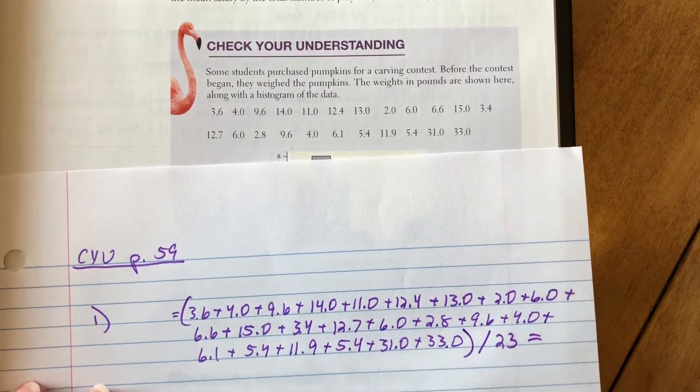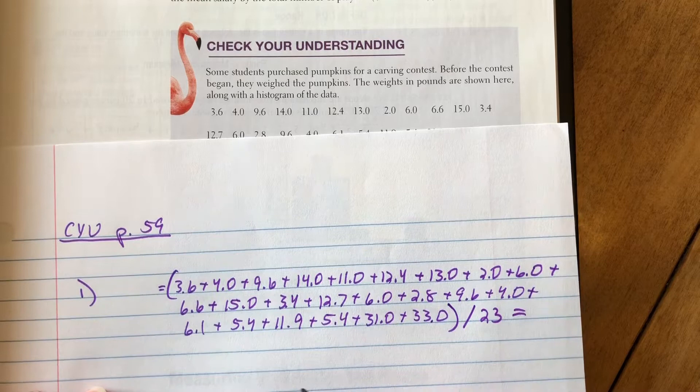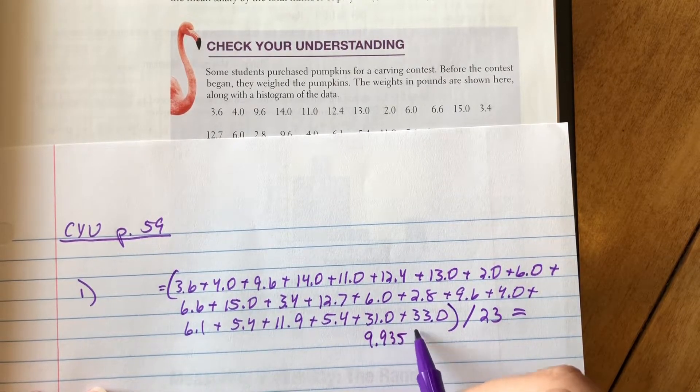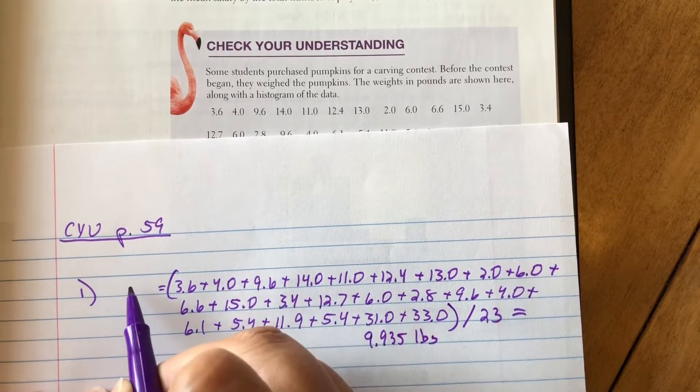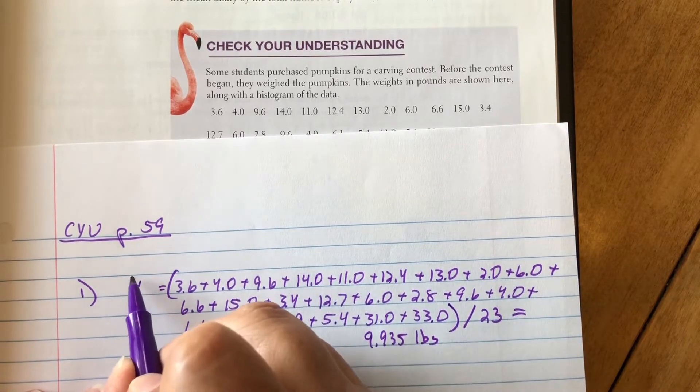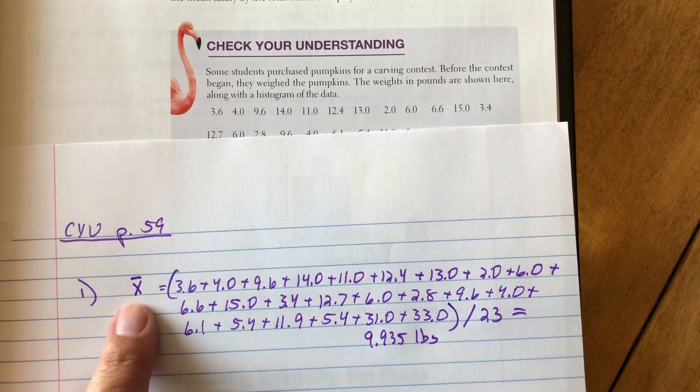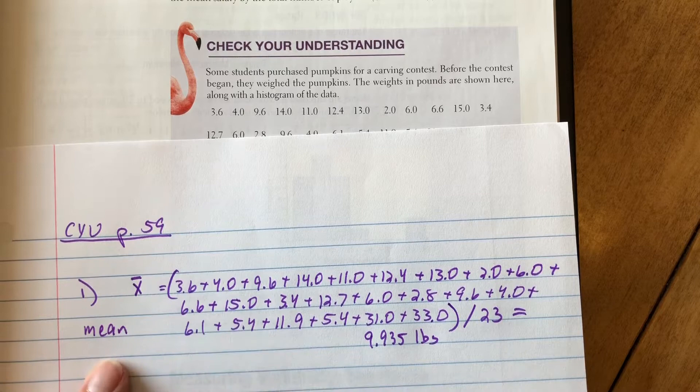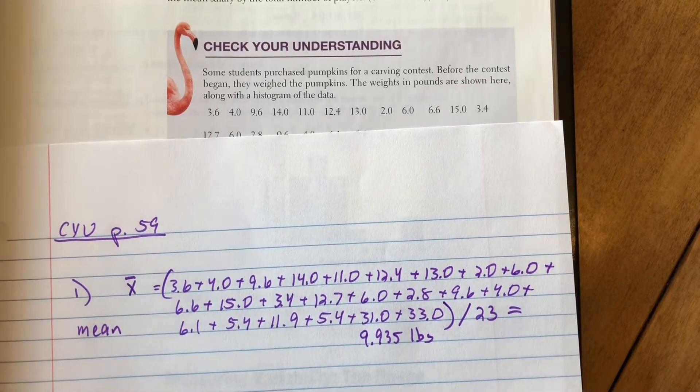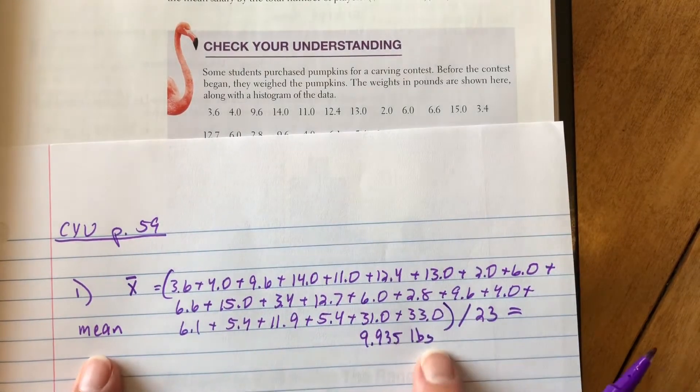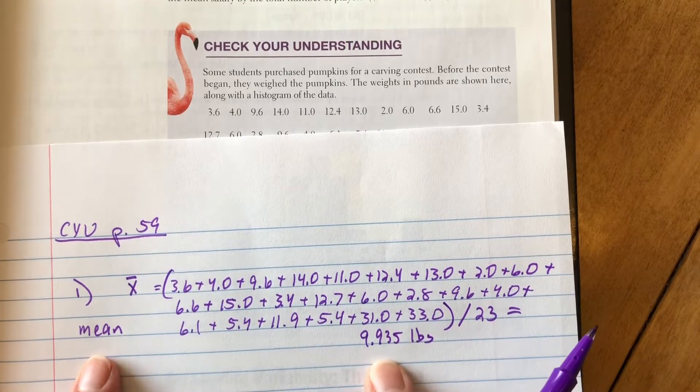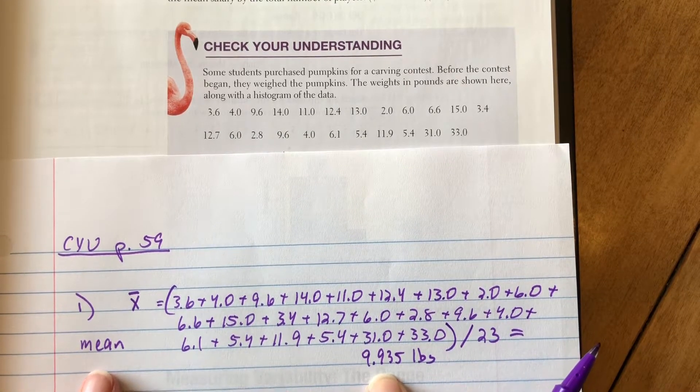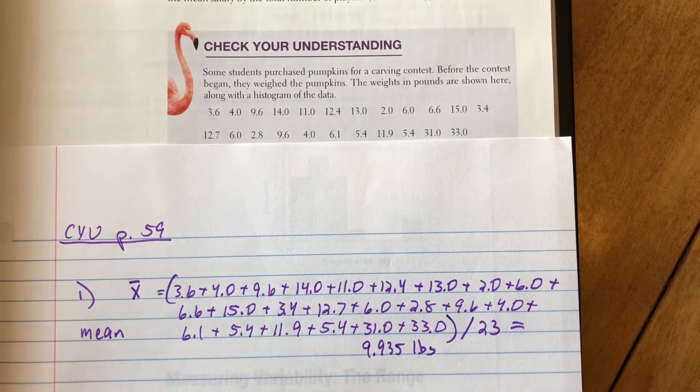So I'm going to add all those up and then divide by, how many did I say? 23. Okay, stick that in your calculator and we get 9.935 pounds. Okay, so the mean is going to be denoted with a small x and a bar above it. So that's the mean, that's the average, that's the arithmetic average. The mean pumpkin weight is 9.935 pounds.